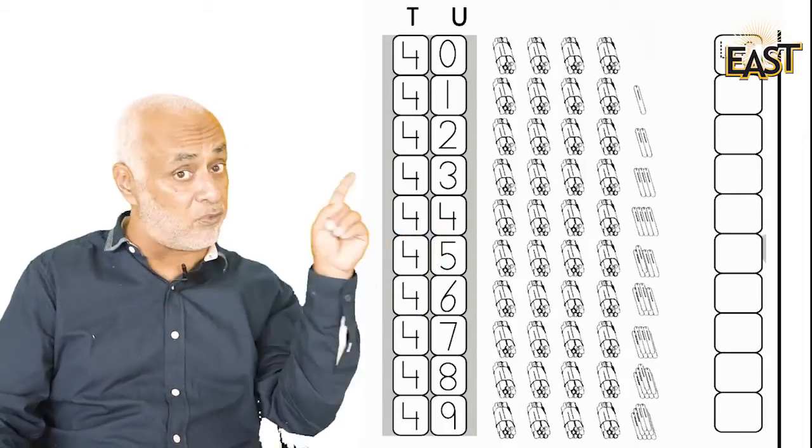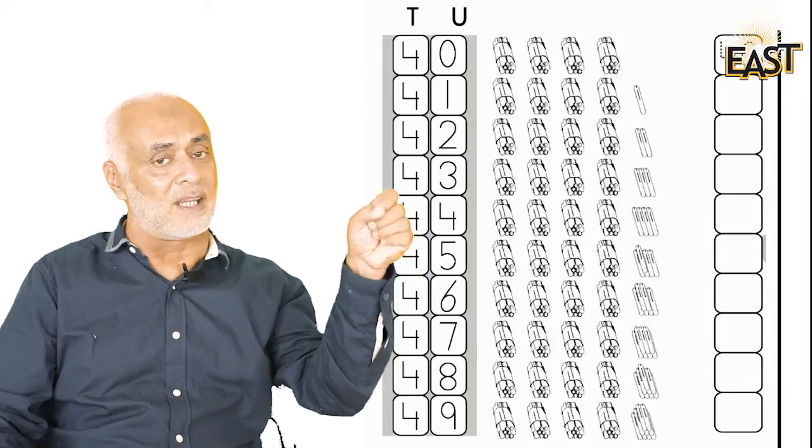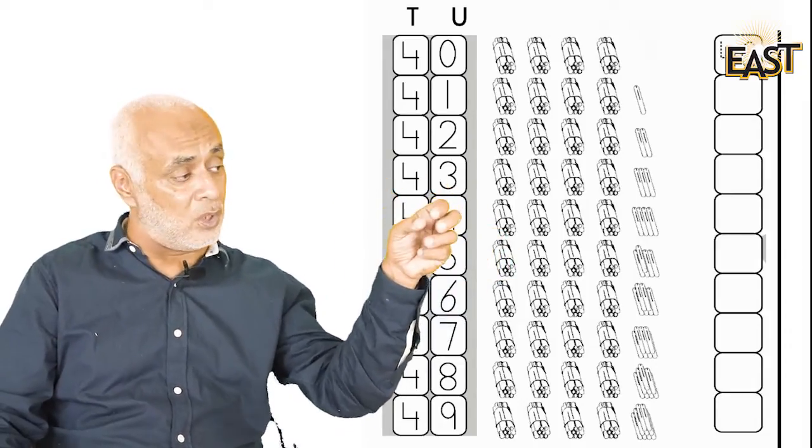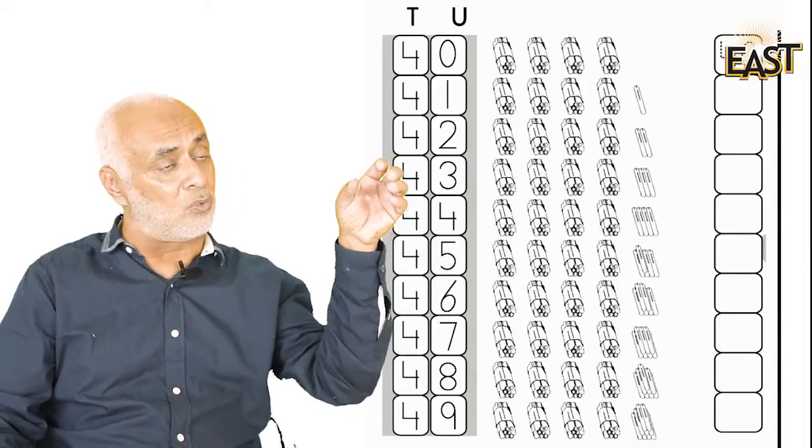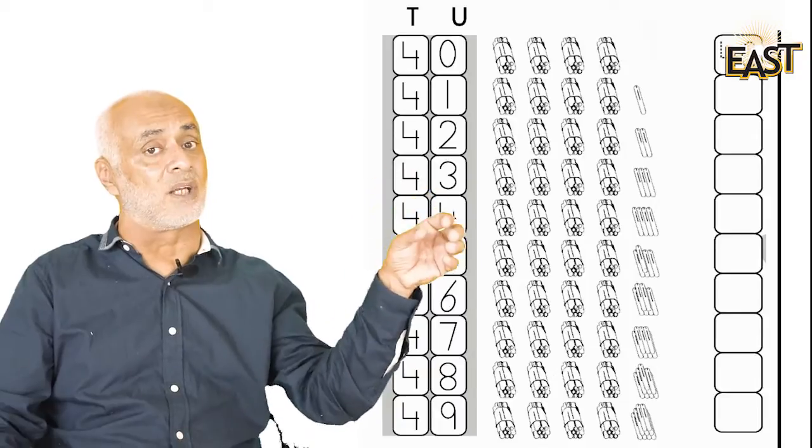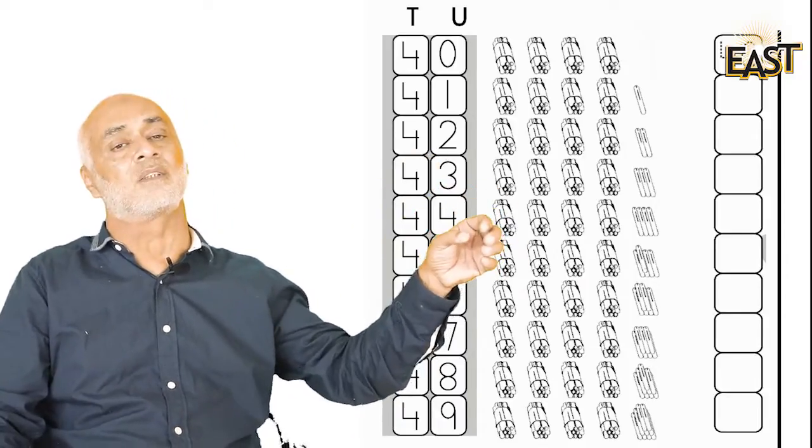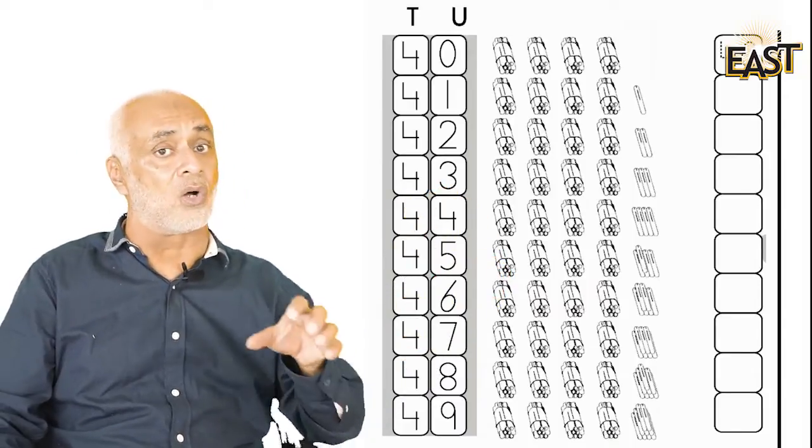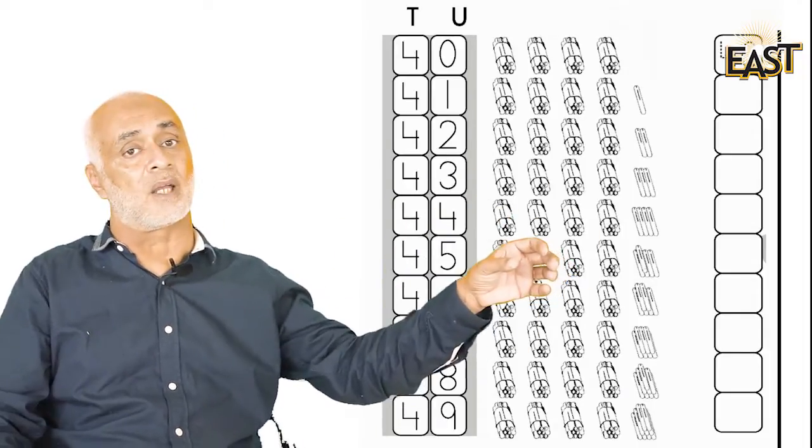Before we start this, you know that one ten is ten, two tens are twenty, three tens are thirty, and four tens are forty. So that is forty.